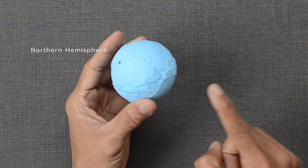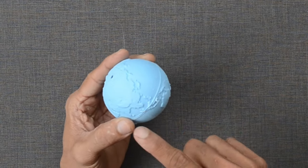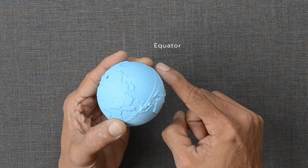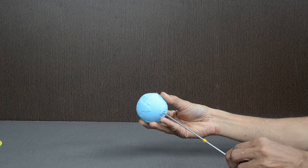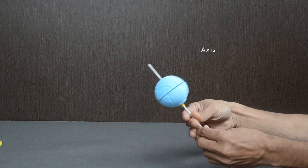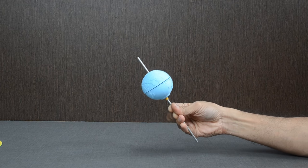This is the northern hemisphere and this is the southern hemisphere of the Earth. Imaginary line dividing these two hemispheres is known as the equator. This is the axis of the Earth around which it rotates. I can rotate it by hand like this.